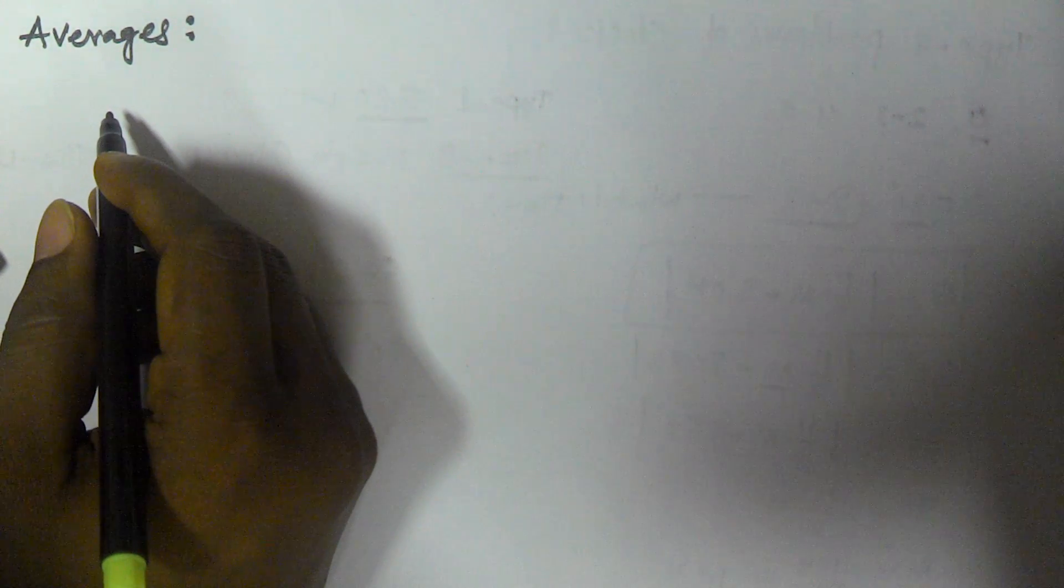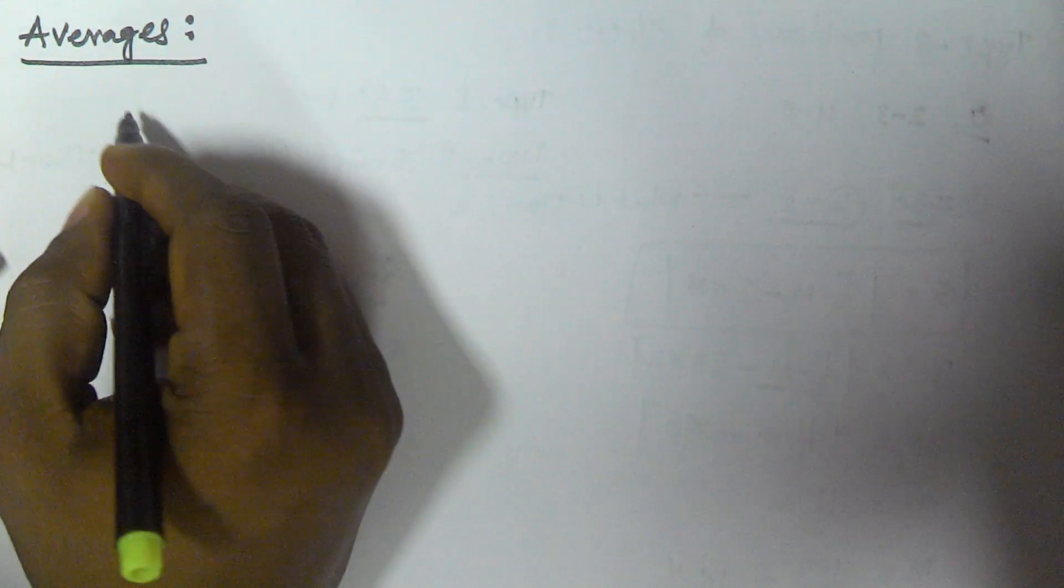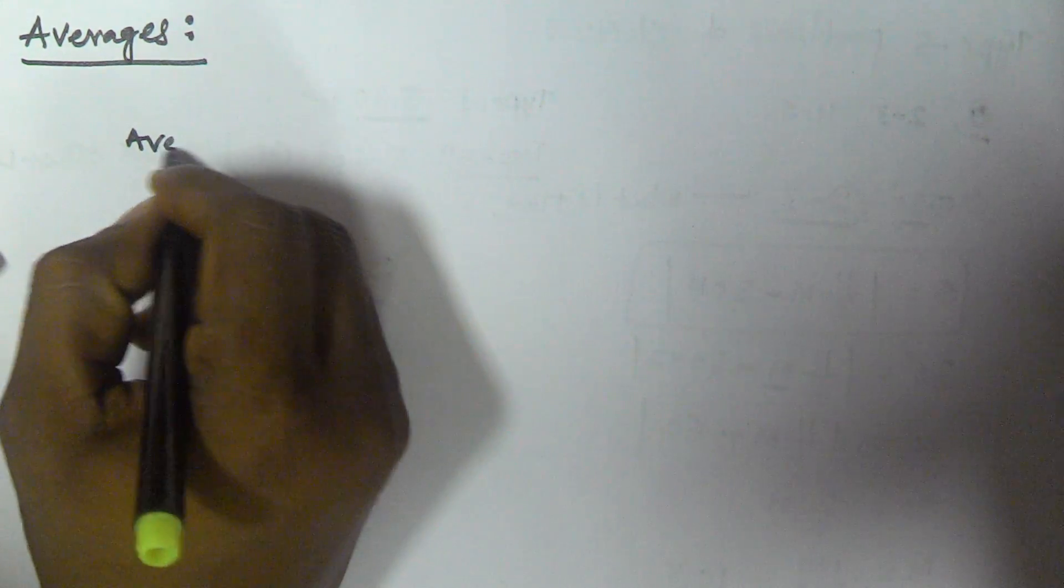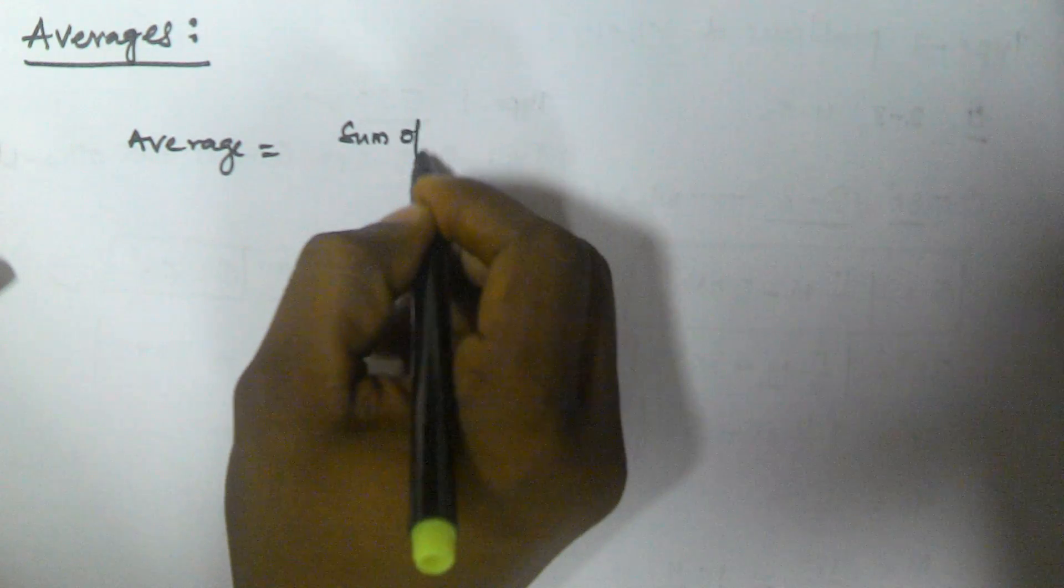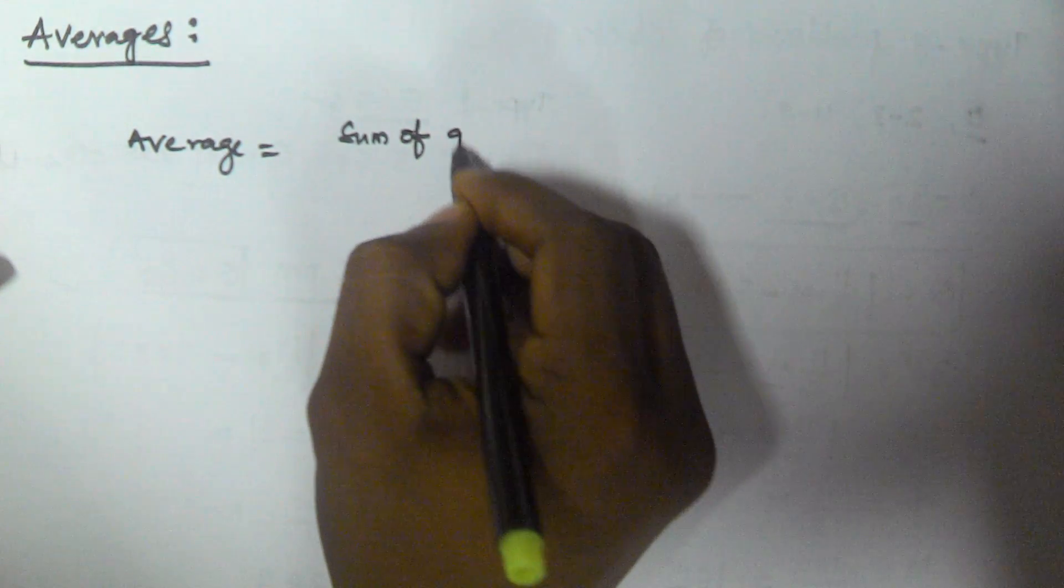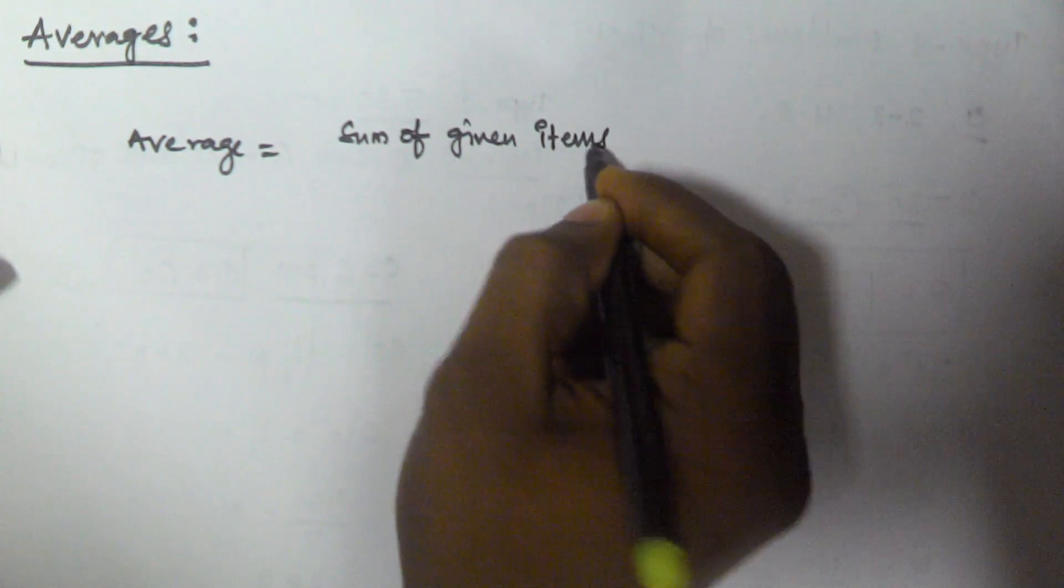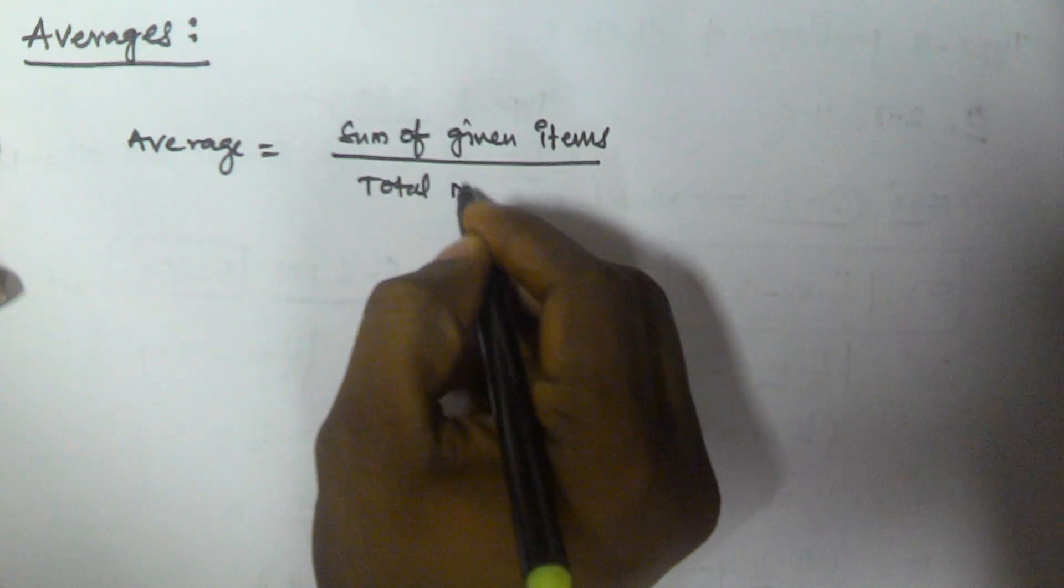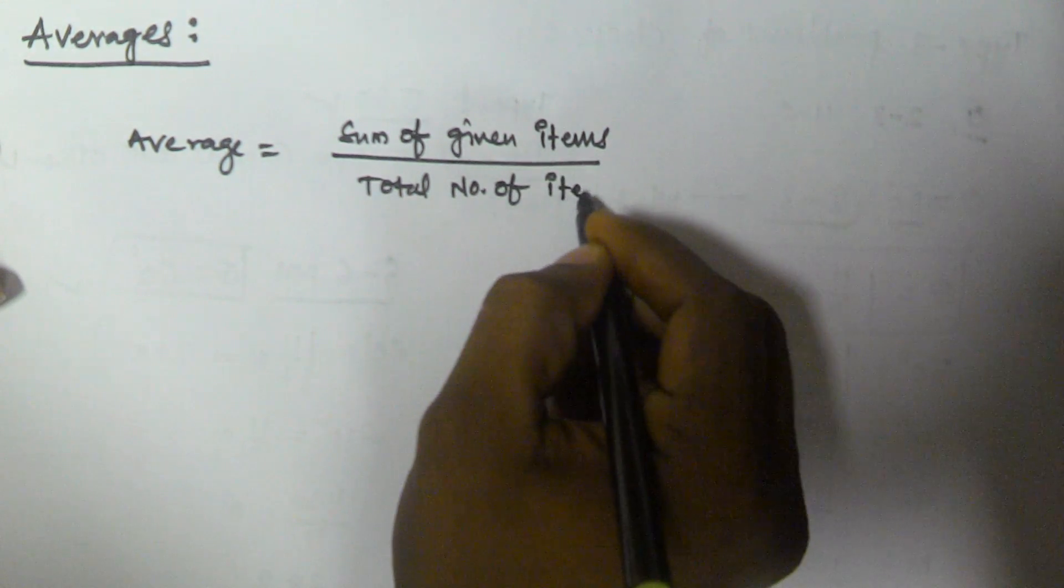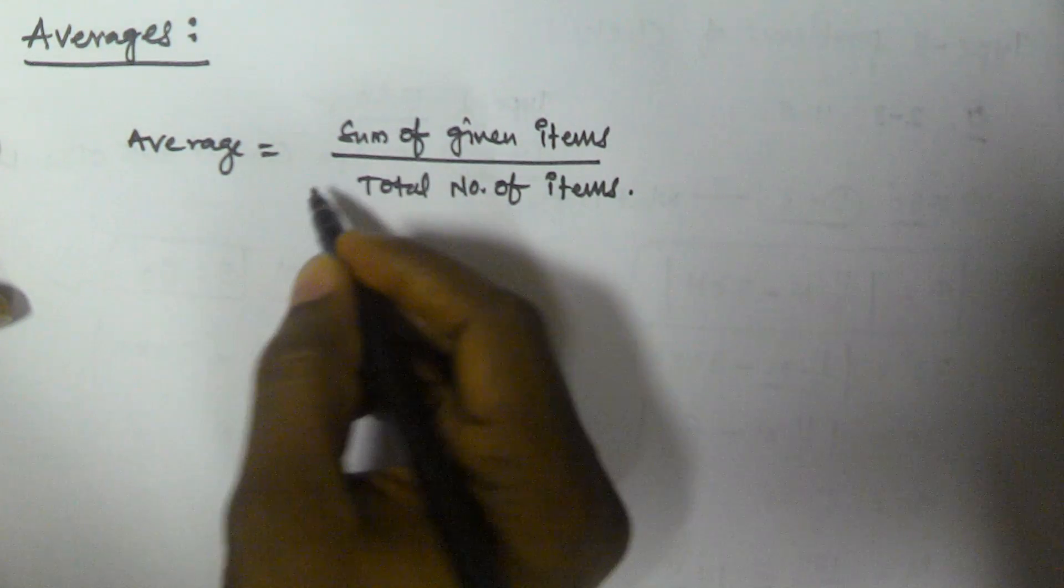Hello friends, in this video I am going to explain the concept of average. The formula for finding average is: average equals sum of given items divided by total number of items.